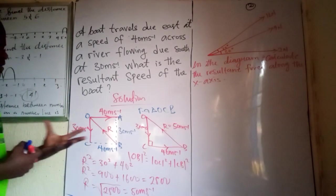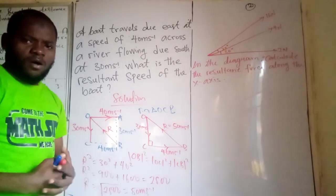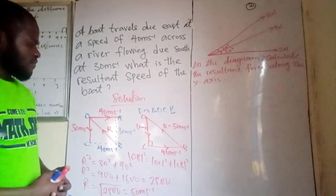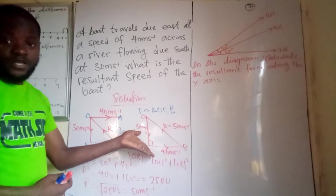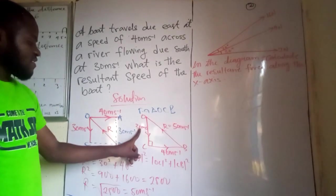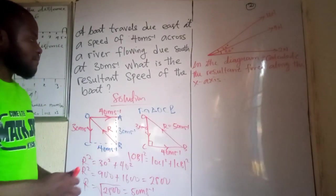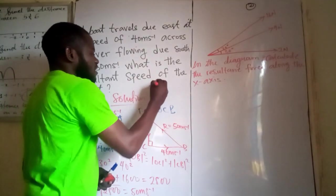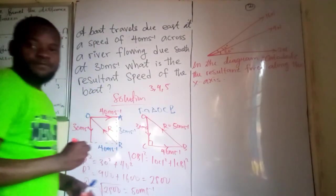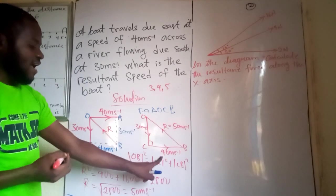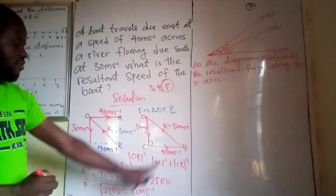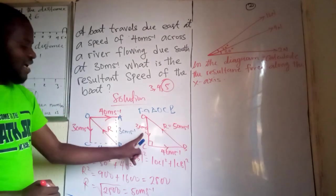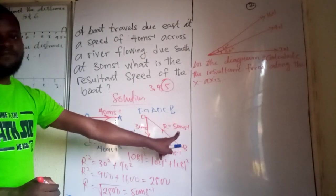Now, in case you are in exam hall and you are given this, if this is one of the multiple choice questions, you don't need to stress yourself. If this is 30 and this is 40, you remember the Pythagoras triple, three, four, five. So if I have three and I have four, I know that the next digit is going to be five. And you can see we have 50, 30, 40, 50.